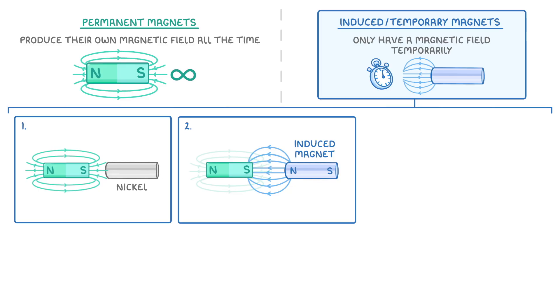And the key point to remember with induced magnets is that the force between a permanent and induced magnet will always be attractive, which is why the left side of our piece of nickel became a north pole rather than a south pole.